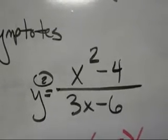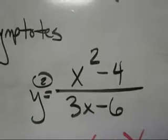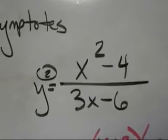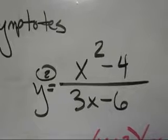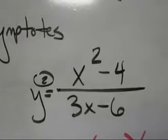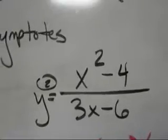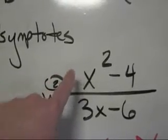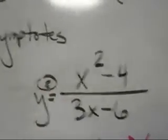Let's do another. x squared minus 4 over 3x minus 6. That is what y is equal to. Again, the first thing I ask myself is, can I factor the numerator and or the denominator? The numerator is a difference of squares and the denominator I can take out something common.